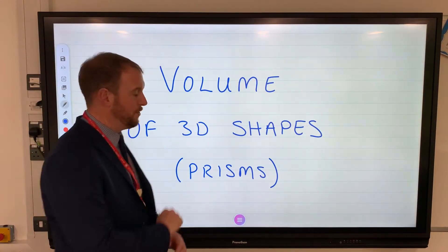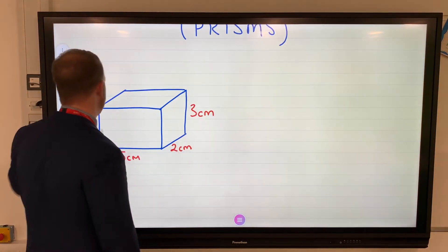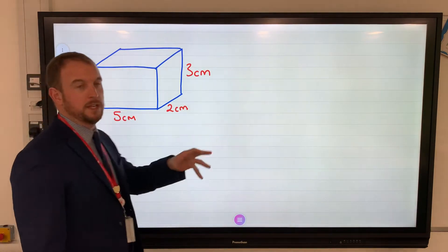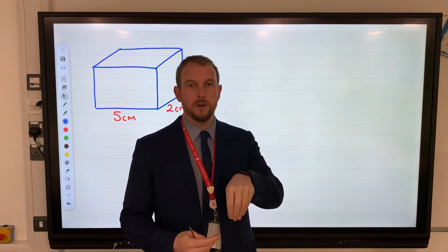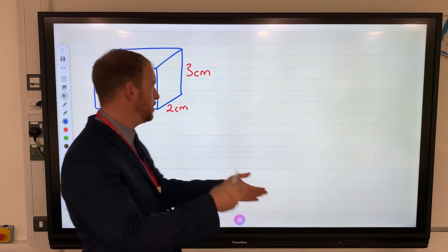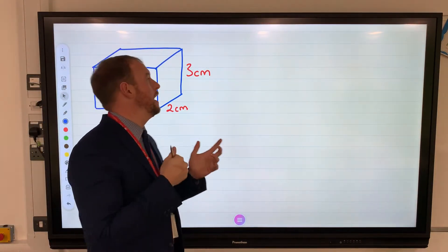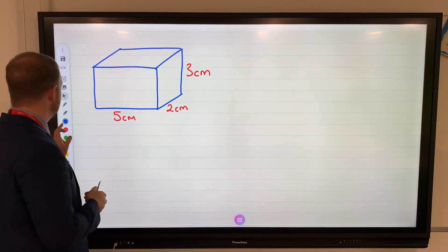So looking at volume of 3D shapes today, also known as prisms. 3D shapes are shapes where something can be inside the shape - think of a fish tank, it's 3D, water goes into the fish tank. For each of these we need to use a formula.